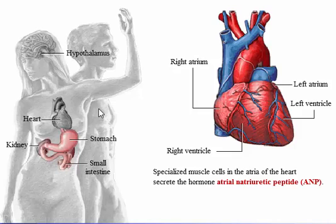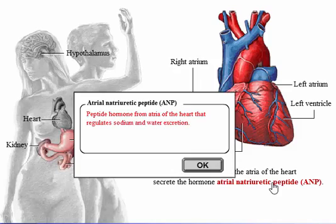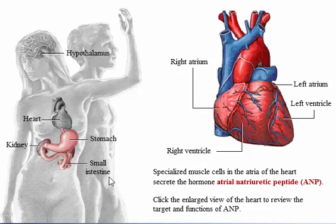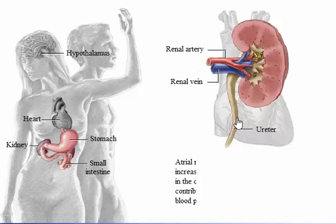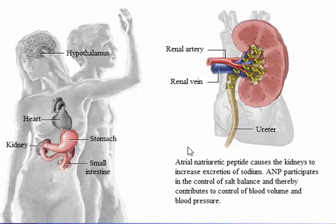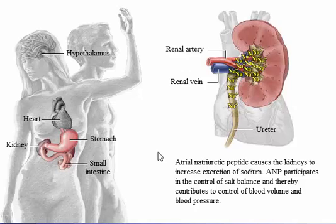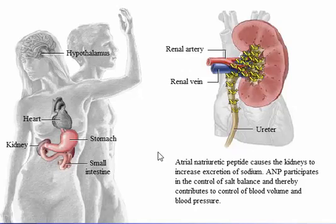Specialized muscle cells in the atria of the heart secrete the hormone atrial natriuretic peptide (ANP). ANP causes the kidneys to increase excretion of sodium, and participates in the control of salt balance, thereby contributing to control of blood volume and blood pressure.